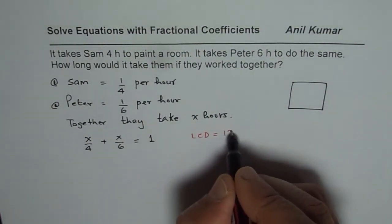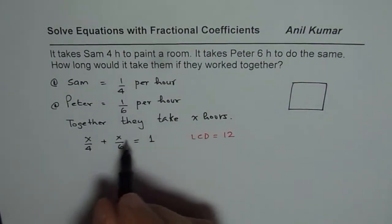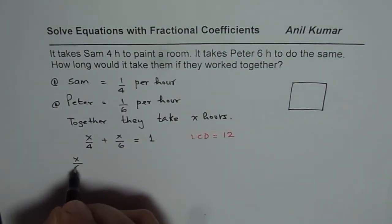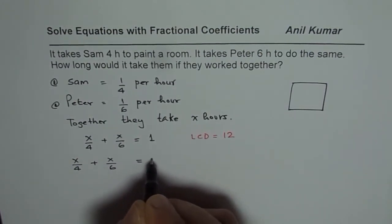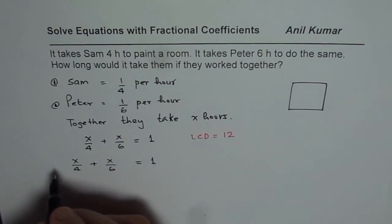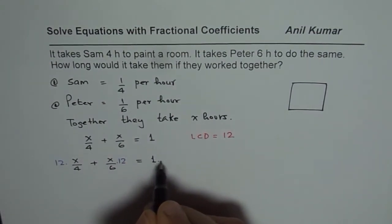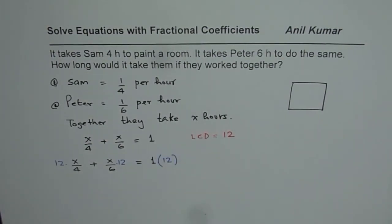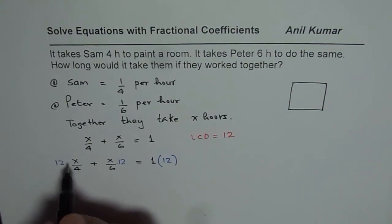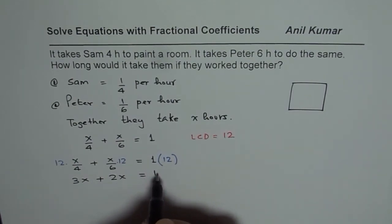To solve, we have to multiply each term by twelve. We have x over four plus x over six equals to one. We'll multiply each term by twelve to get rid of fractions. Twelve divided by four is three, so we get three x plus twelve divided by six is two. Two x equals to twelve.